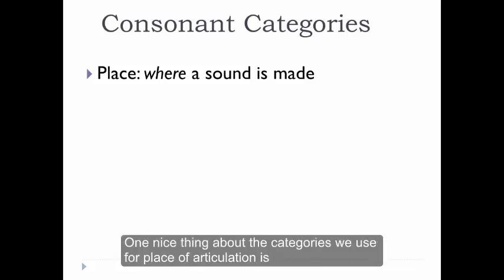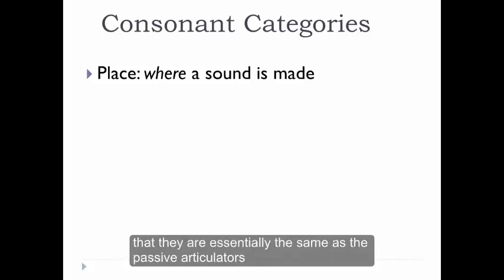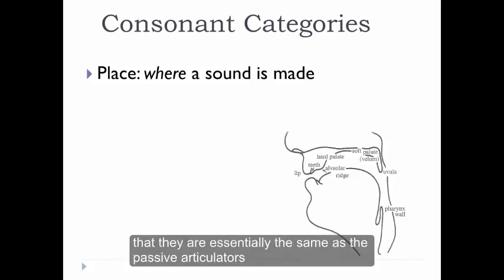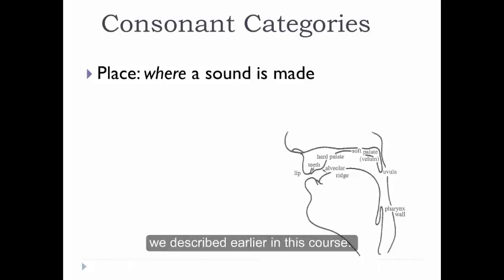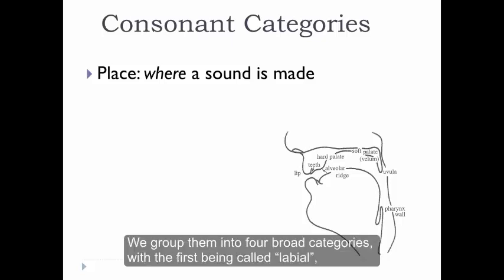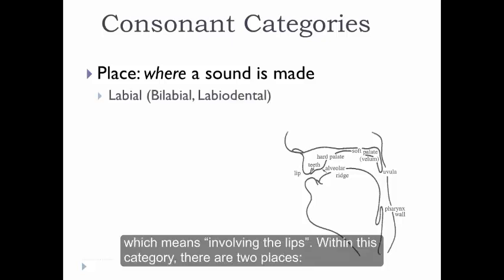One nice thing about the categories that we use for place of articulation is that they're essentially the same as the passive articulators that we described earlier in this course. We grouped them together into four broad categories, with the first being called labial, which means involving the lips.